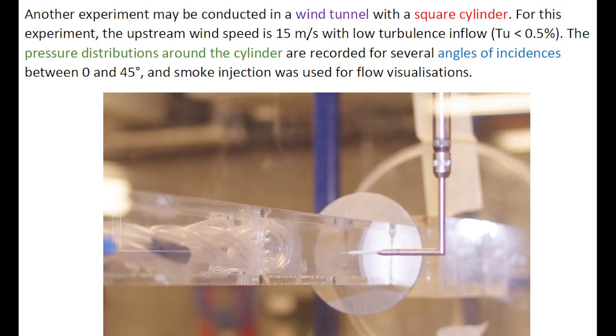Another experiment may be conducted in a wind tunnel with a square cylinder. For this experiment, the upstream wind speed is 15 meters per second with low inflow turbulence. The pressure distribution around the cylinder is recorded at several angles of incidence between 0 to 45 degrees, and smoke injection is used for flow visualization.